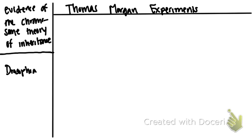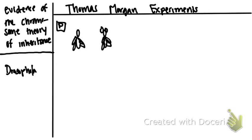He did this by looking at drosophila, which is a common fruit fly. He took a parent generation — the original, OG generation — and he took a couple of fruit flies. The only difference between these two is that one of them has white eyes — that's the male — and the other one has red eyes.